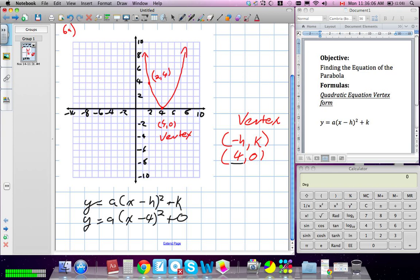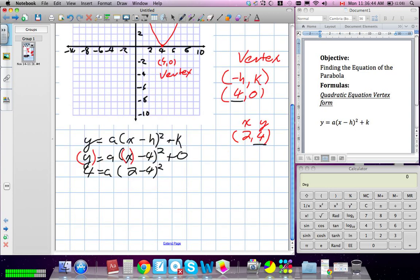Now I still have 1, 2, 3 variables in this question. I need to isolate for a. In order to isolate for a, I'm going to use the other coordinate they've given us, which is 2 and 4. And I'm going to plug them in as the x and y values. Because they fall on the line, we can replace the y and x in the equation with those numbers. So our y value is now 4 is equal to a times 2 minus 4 squared.